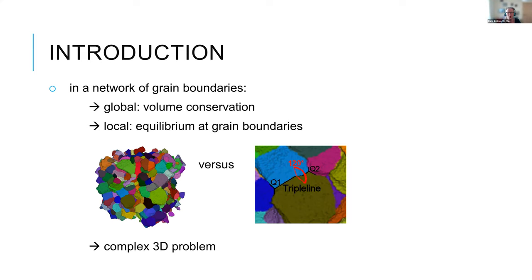While this seems easy, in reality it's not, because in reality we have a polycrystal. We always have neighboring grains, and not everybody can shrink since we have volume conservation on a global scale. Locally, we have equilibrium at the grain boundaries. If all boundaries have the same properties — same mobility, same energies — then three neighboring grains sharing a triple line will have 120-degree angles between boundary faces. It's really a complex 3D problem, and this also applies to thin films.